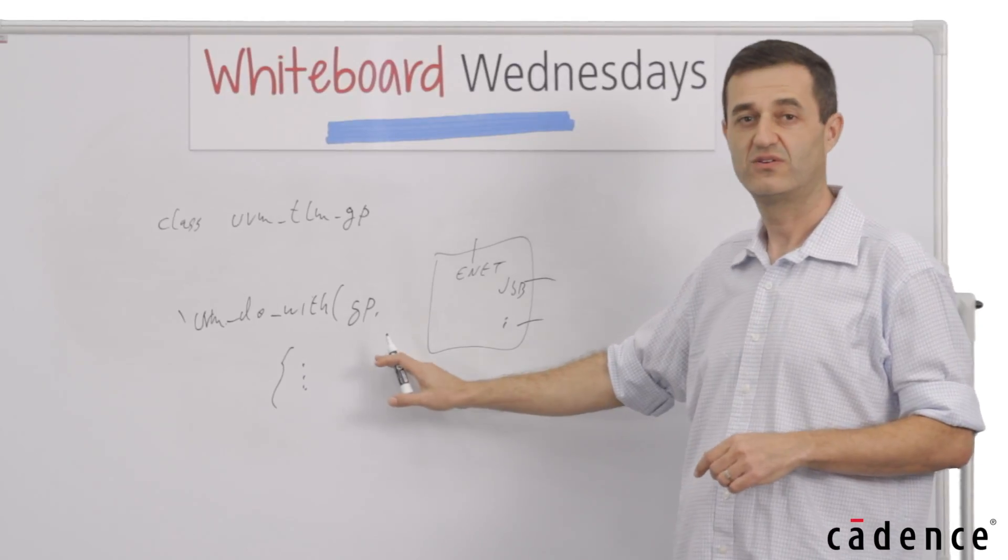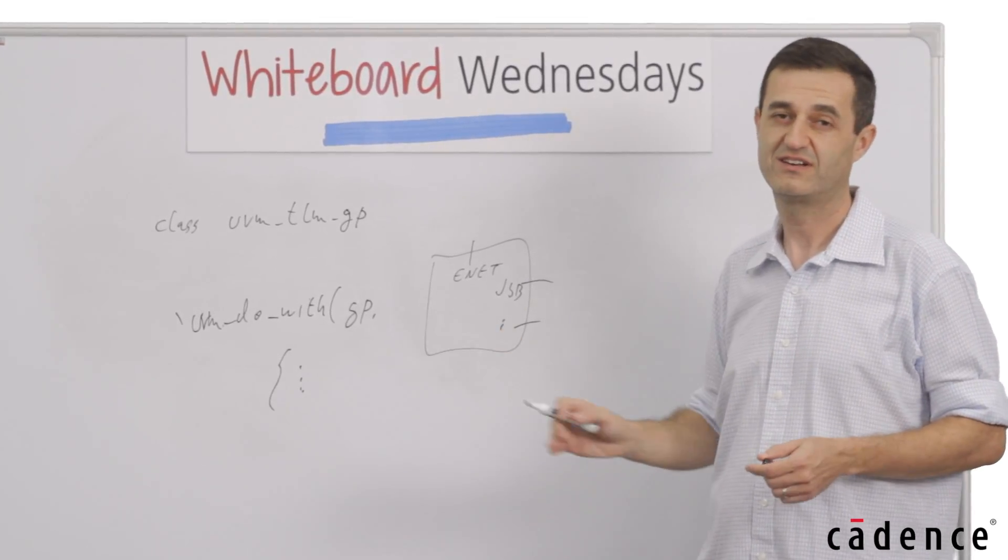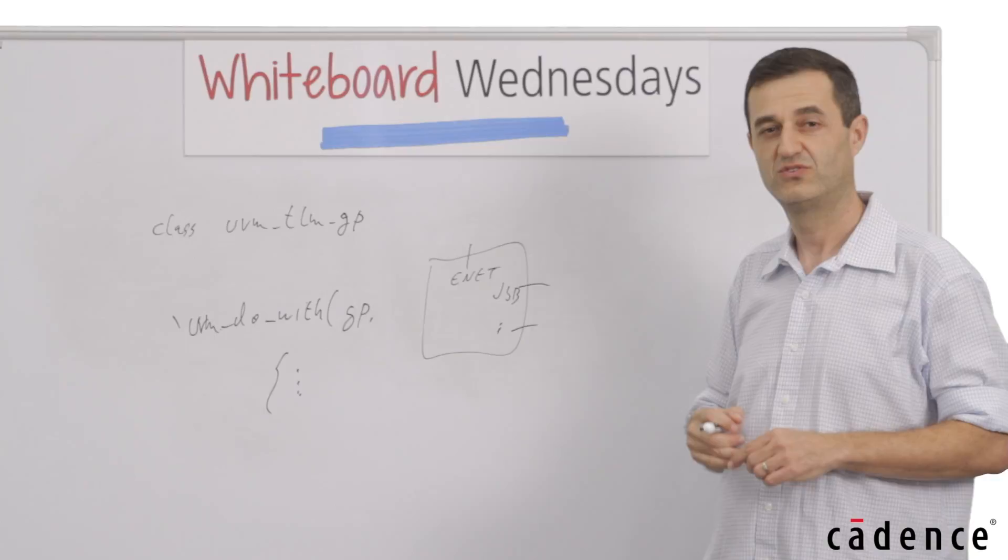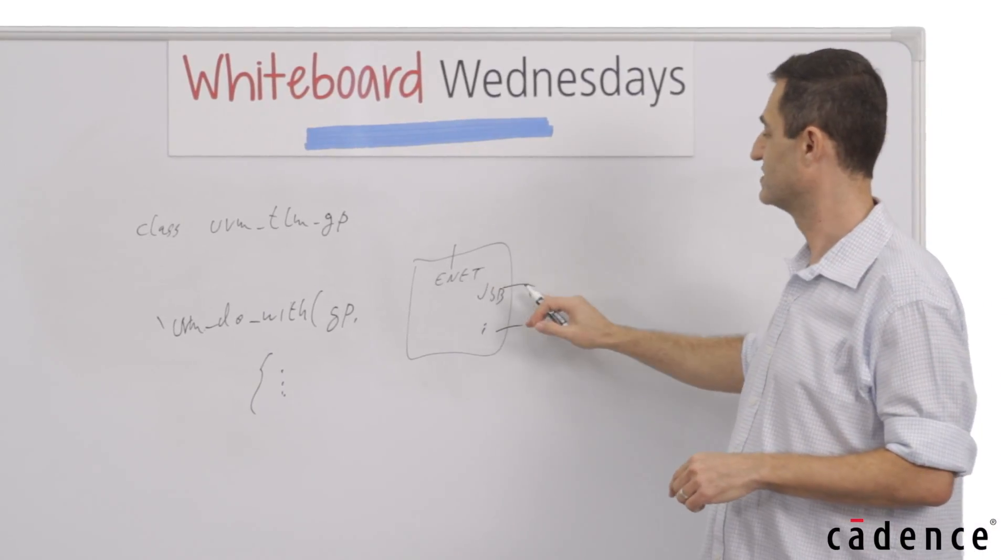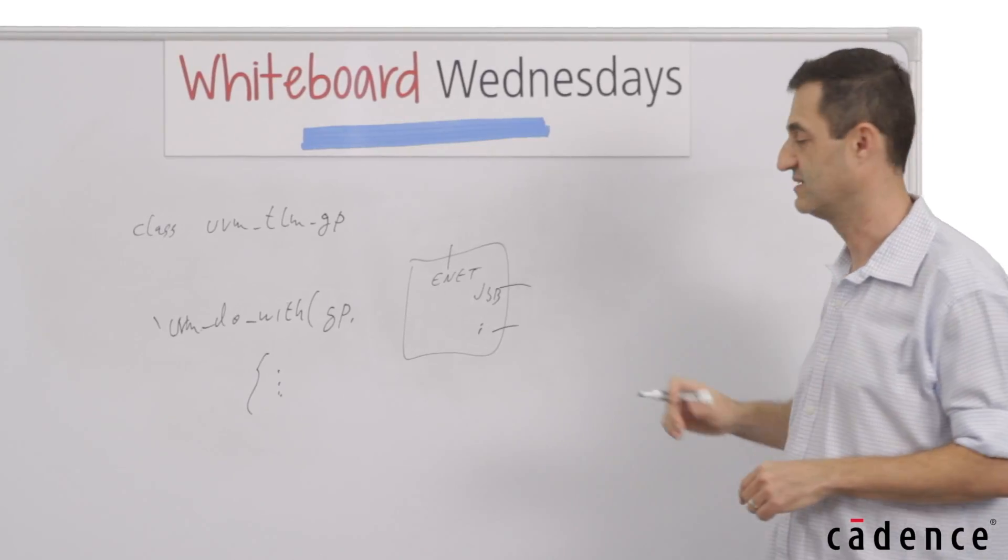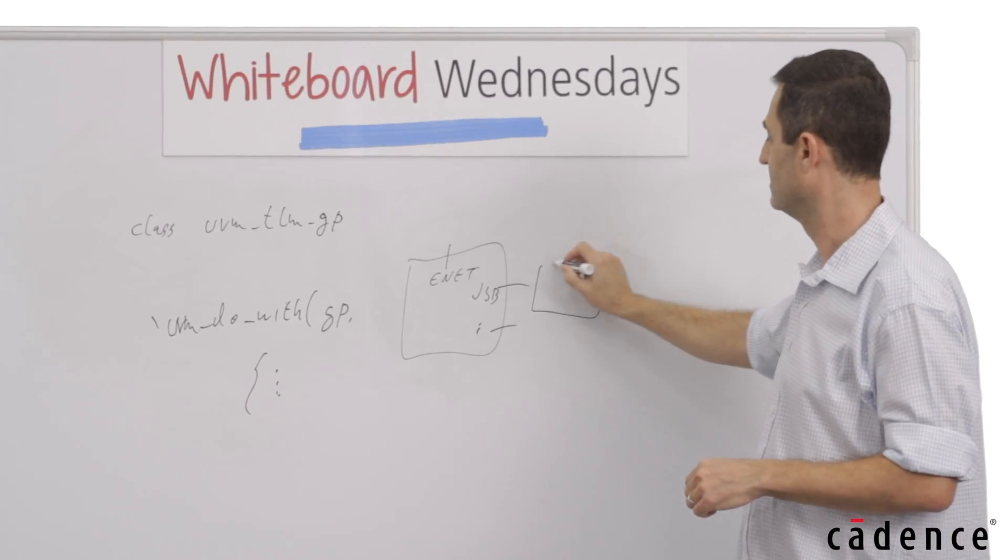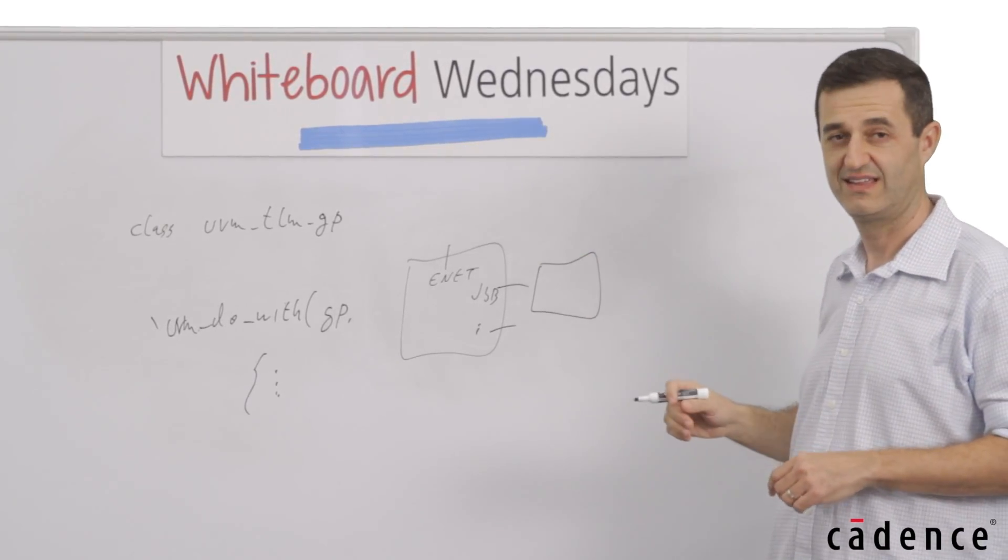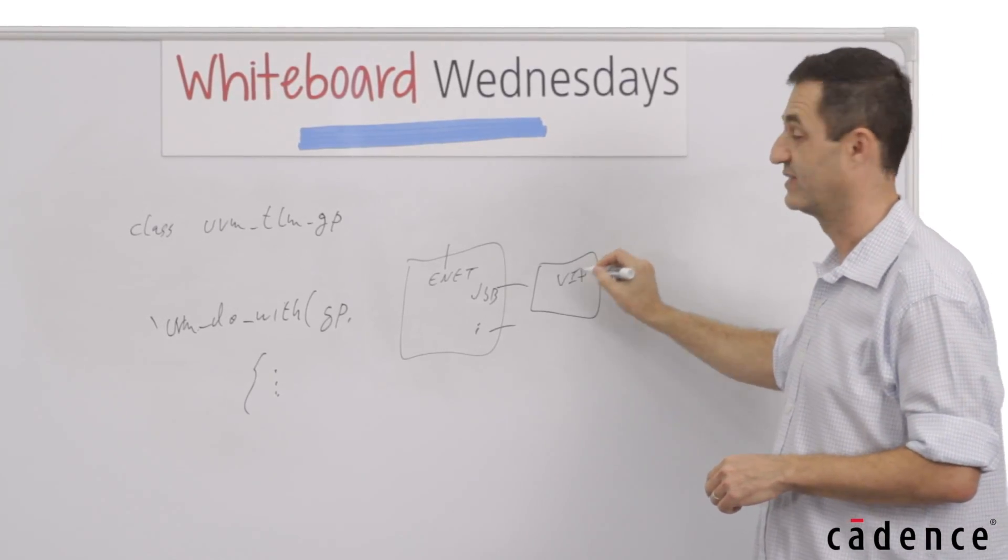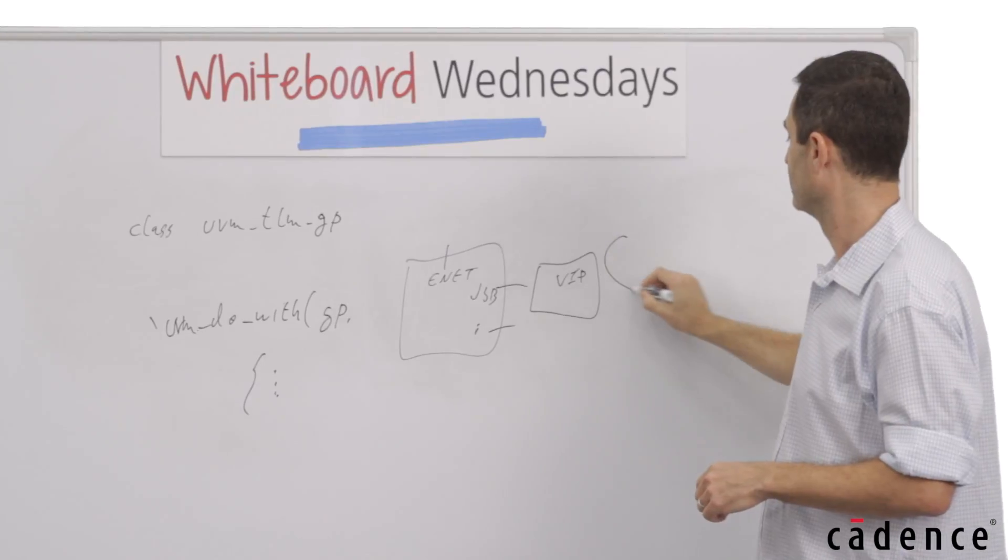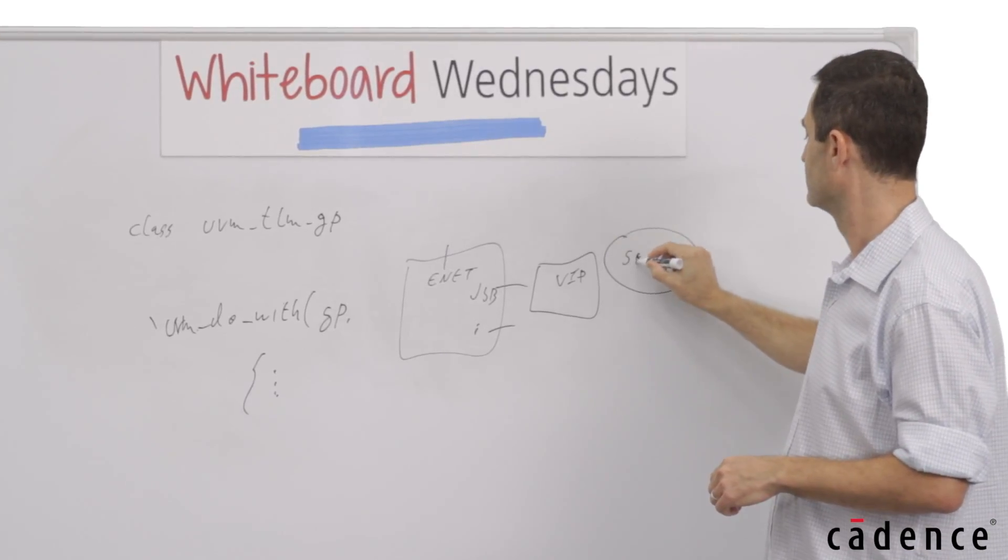Once you have such a library, all you need to do is use standard layering technique in UVM to drive it on top of a specific VIP. So let's say we're going to focus on the USB connection this time. We're going to take a USB VIP connected to the DUT. That USB VIP, from Cadence of course, will have its own sequencer, a USB sequencer.